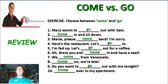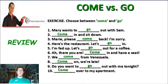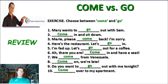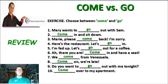Example five: "I'm fed up" — meaning I'm very, very tired. "Let's go out for a coffee." Example six: "Oh, there you are — come in, have a seat." Example seven: "We come from Venezuela." Example eight: "Come on, we're late!" Example nine: "Do you want to go out with me tonight? Let's have some dinner." Example ten: "Come over to my apartment" — that's what you say when you're talking on the phone.